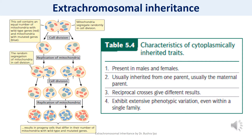In this way, different progeny from the same mother — and even cells within an individual offspring — may vary in their phenotype. Traits encoded by chloroplast DNA are similarly variable. Characteristics that are cytoplasmically inherited include: they are present in both males and females; they are usually inherited from one parent, typically the maternal parent; reciprocal crosses give different results; and they exhibit extensive phenotypic variation even within a single family.